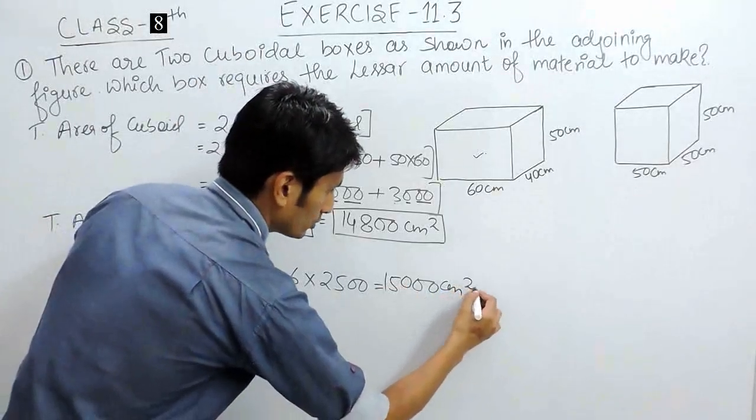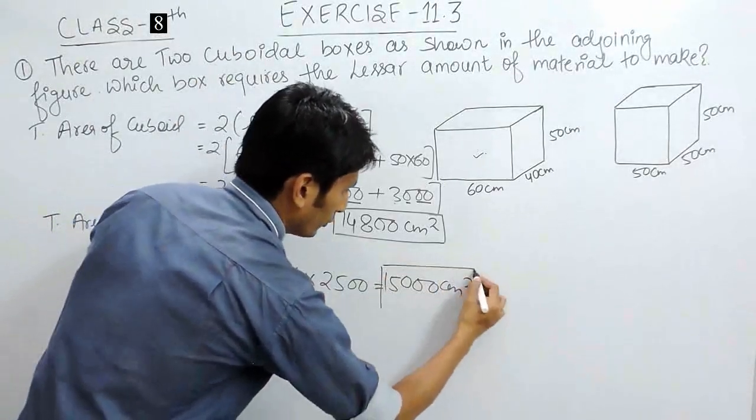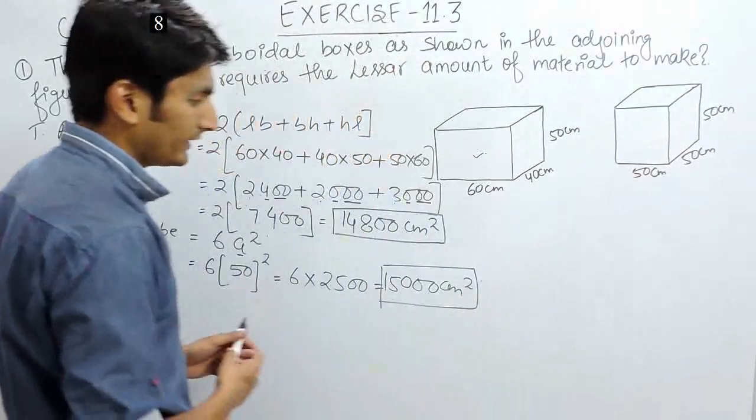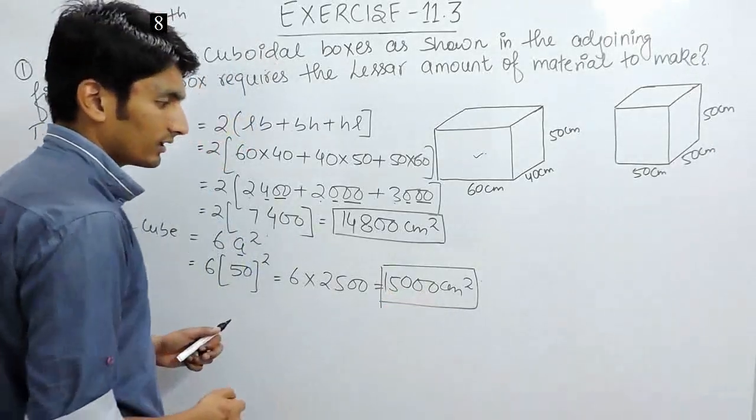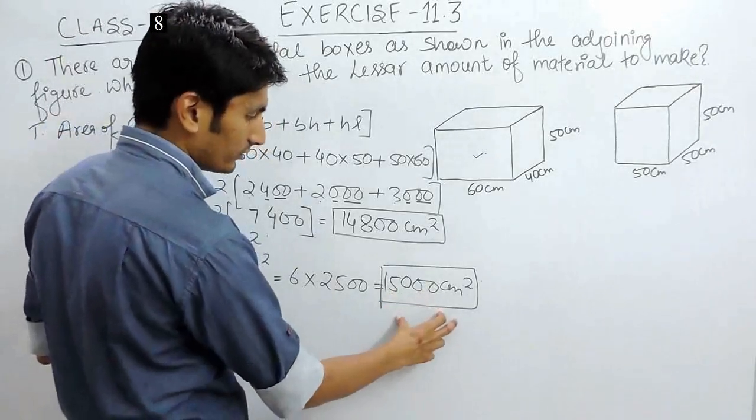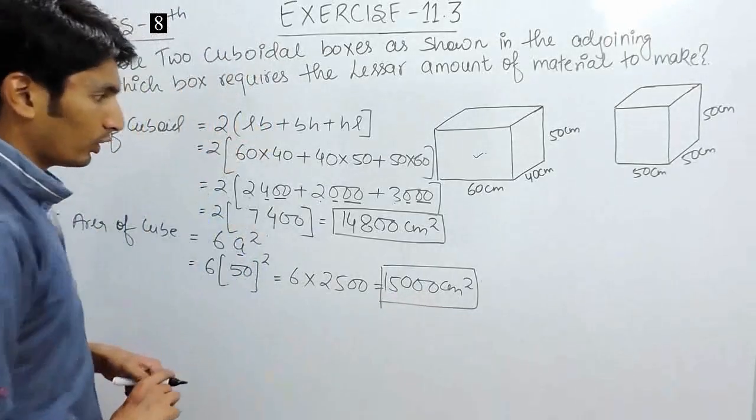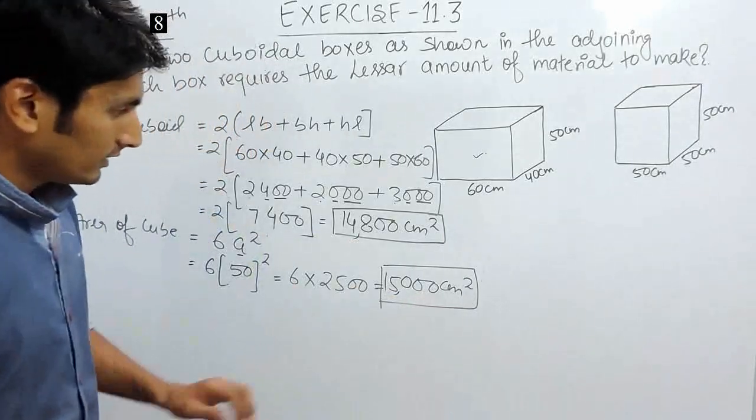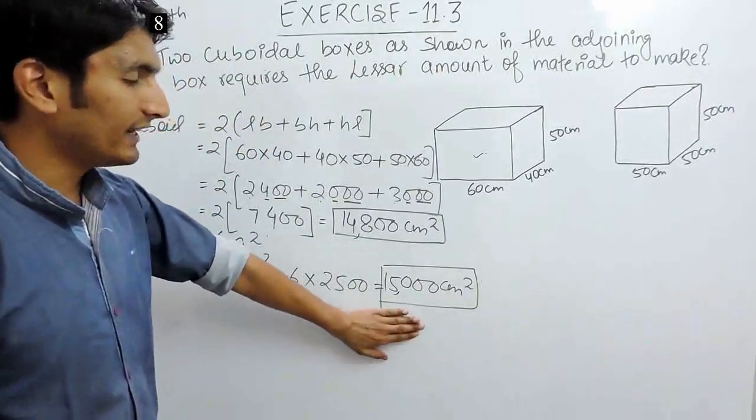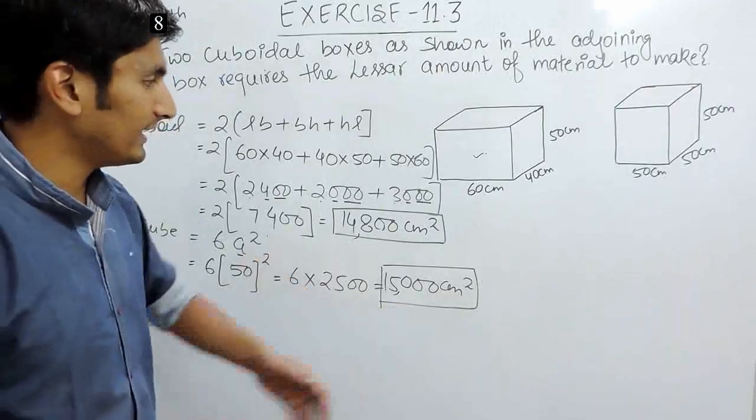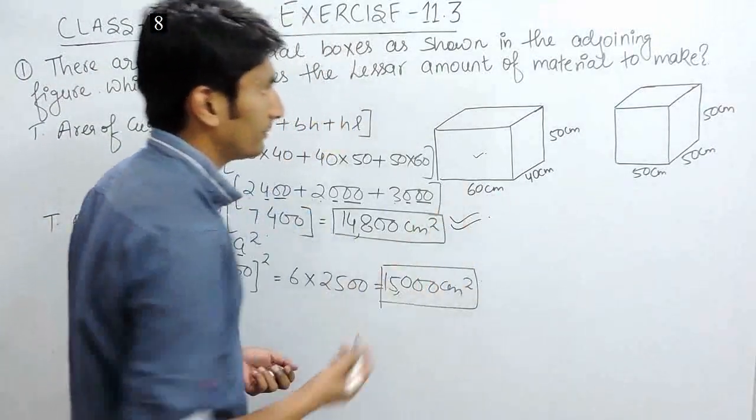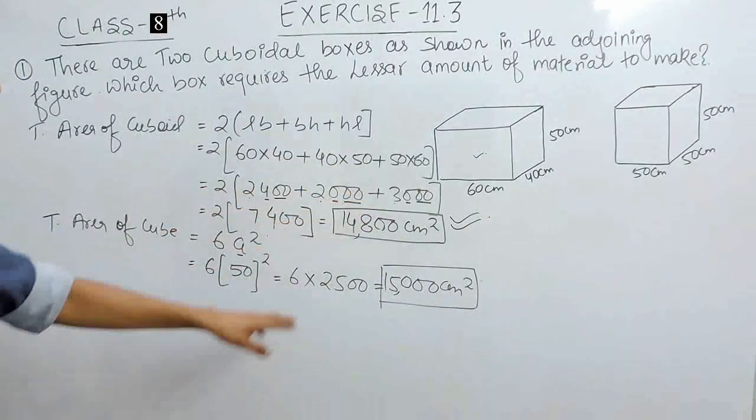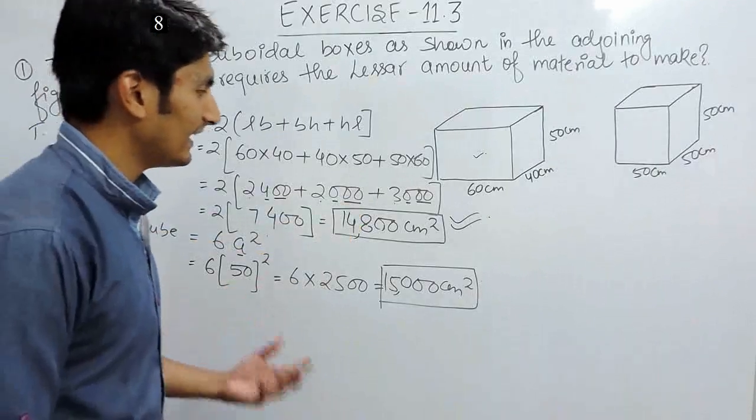This will be centimeter square. And if you want to make this cuboid, you would be needing this much cardboard, whose area is this much. Now, clearly, it is this area where we would be needing more cardboard. So clearly, this will be the figure, or you can say this will be the box, which would require lesser material to build.